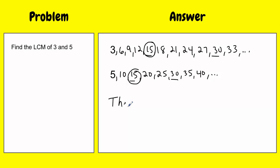So, the LCM of 3 and 5 is 15. That's the smallest multiple that these two numbers have in common.